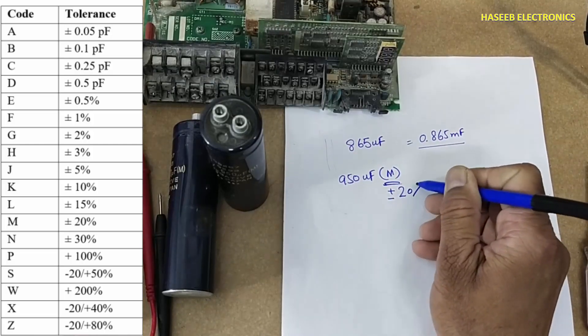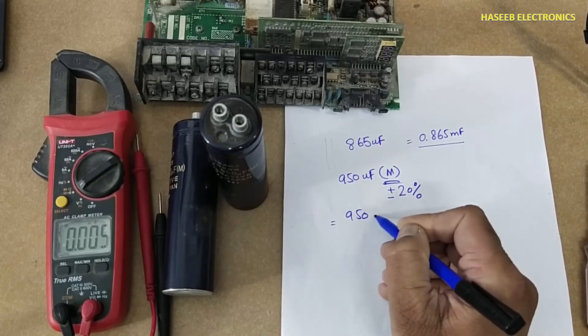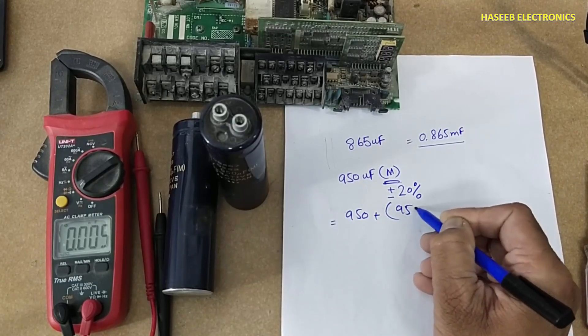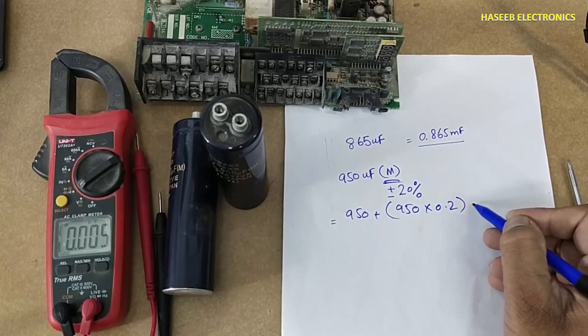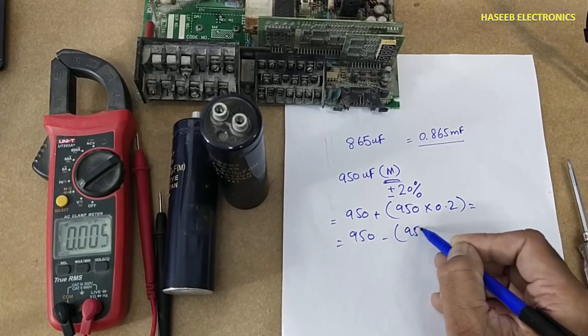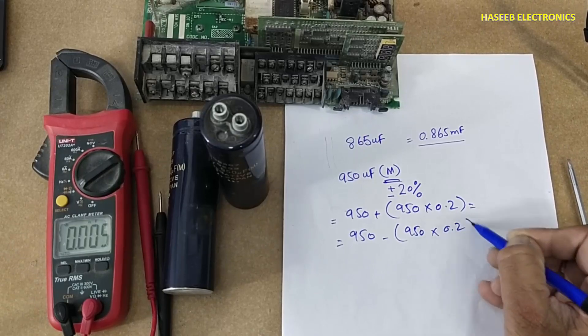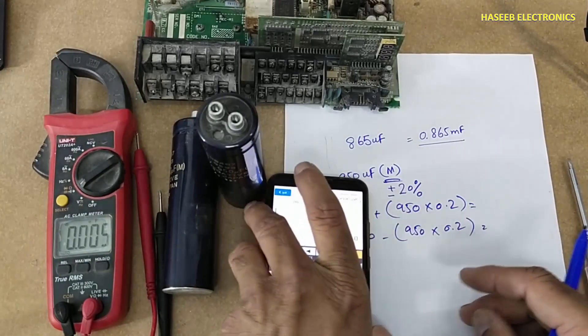That means 950 plus 950 times 0.2 - that is 20 percent. The second calculation: 950 minus 950 times 0.2. It is plus 20 percent and this is minus 20 percent.